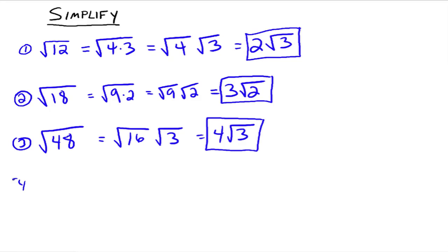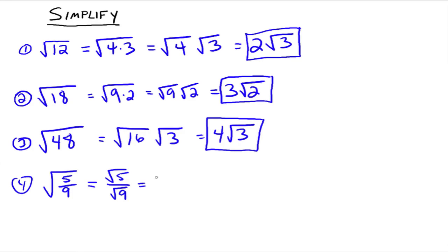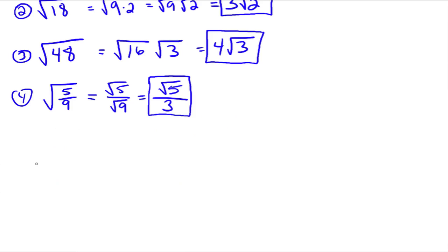What about the square root of 5/9? We notice there's a fraction in the radicand, so it's not completely simplified. Using the second property, we write it as the square root of 5 over the square root of 9. The square root of 5 stays as the square root of 5, but the square root of 9 is 3 — and we don't want radicals in the denominator. So the simplified form is the square root of 5 over 3.